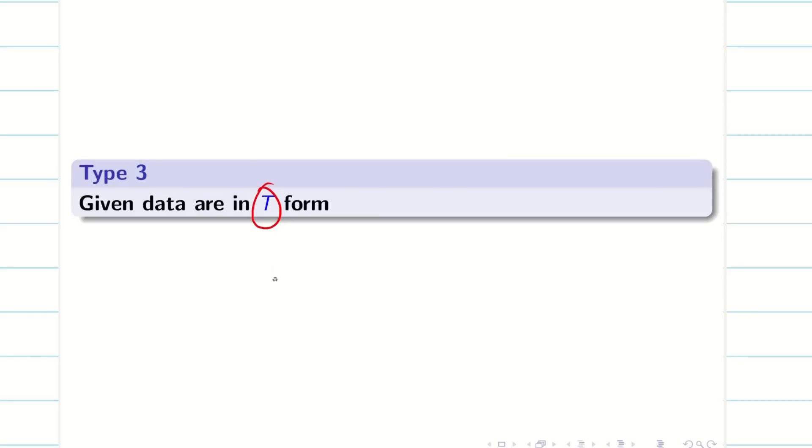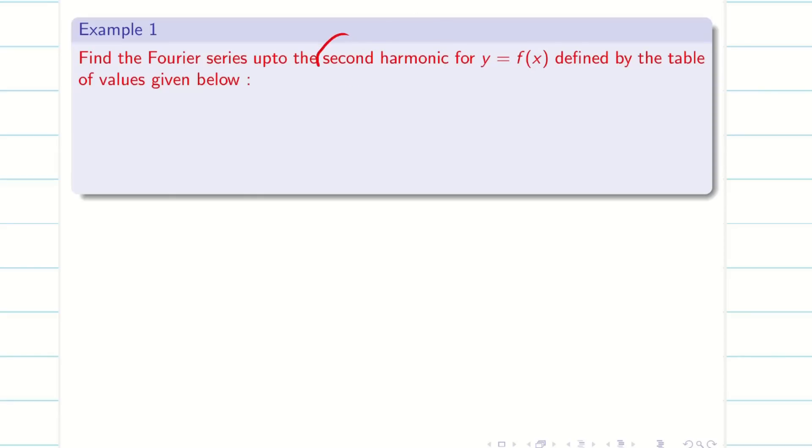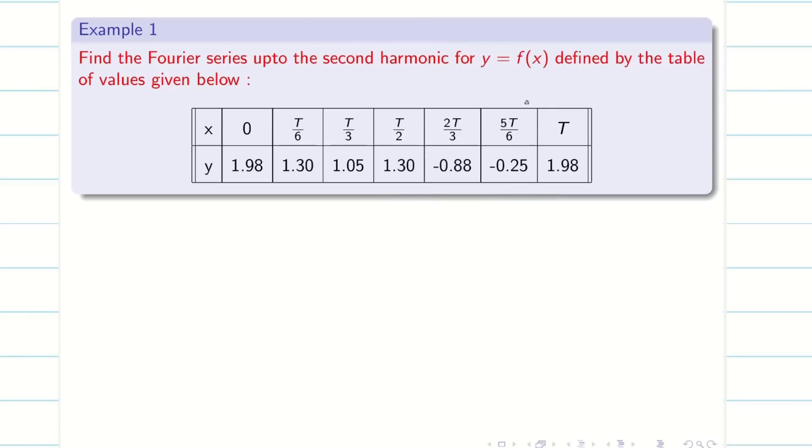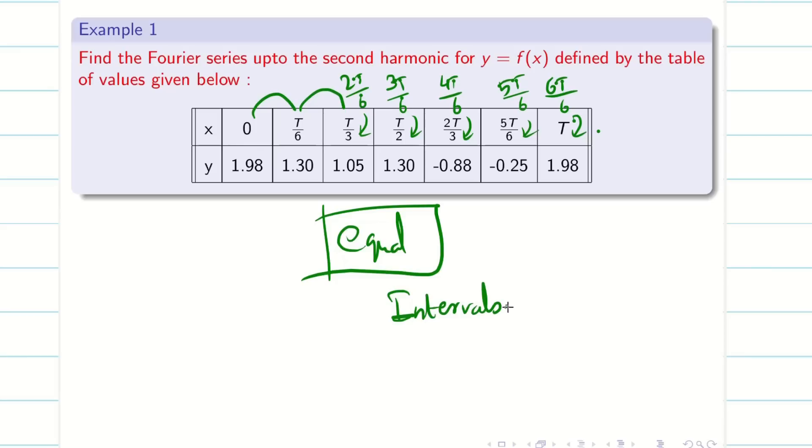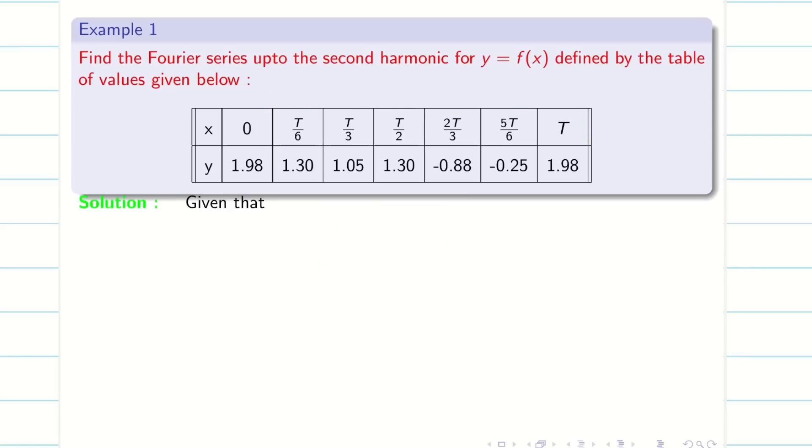All the explanations are given in part 1 video. Now let's go into type 3. If the problem contains t in my x and values in my y, then it's going to be type 3. Let's go into the problem. Find the Fourier series up to second harmonic. So I need to find a0, a1, b1, a2, b2 from the given table. It's in t format and we can see it's in equal intervals: 0 to t by 6, t by 6 to t by 3, then t by 2, 2t by 3, 5t by 6, and t. It's very important to have equal intervals, otherwise we cannot solve the problems.